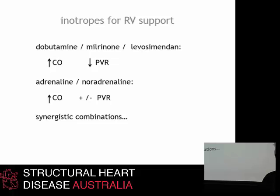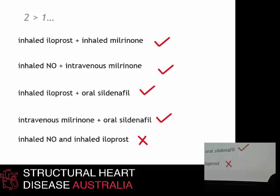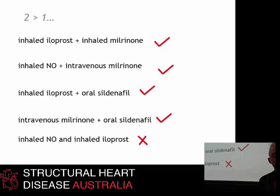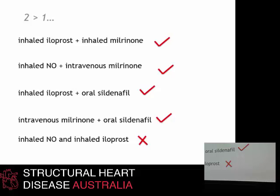It's very useful to use synergistic combinations of drugs with different mechanisms of action. Effective synergistic combinations include inhaled iloprost and inhaled milrinone (approximately 10 micrograms of iloprost plus one to two milligrams of undiluted milrinone); inhaled nitric oxide and intravenous milrinone; inhaled iloprost and oral sildenafil; and intravenous milrinone and oral sildenafil. One combination that has not been shown to be effective is inhaled nitric oxide combined with inhaled iloprost — so you have to choose one of these agents and stick with it.